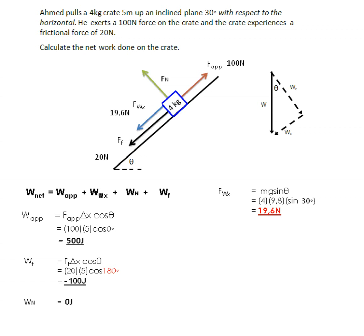The work done by the gravitational force equals mg sinθ × Δx × cosθ. That is 19.6 newtons — the gravitational force component parallel to the slope — times 5 meters, times cos 180° because the box moves up the slope while gravity acts down the slope. This gives us minus 98 joules.